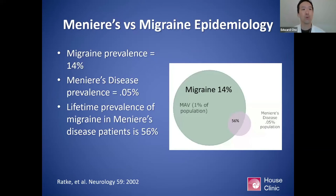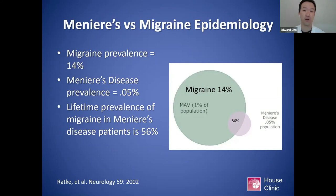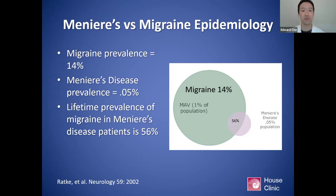When you look at the epidemiology of Meniere's versus migraine headaches in general, you see that migraine headaches have a very high prevalence in the population — estimated about 14% — versus Meniere's disease, which has a very small prevalence of 0.05%. But epidemiologic research has shown that the lifetime prevalence of migraine symptoms and headaches in Meniere's patients is about 56%, so there is some epidemiological overlap.